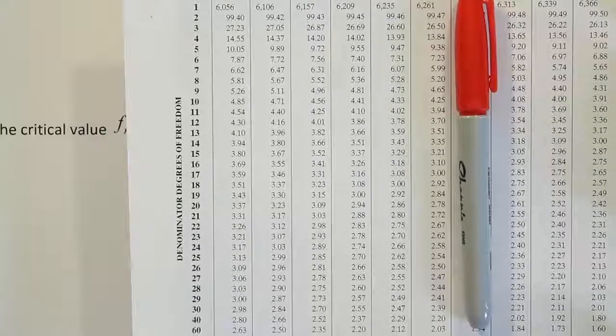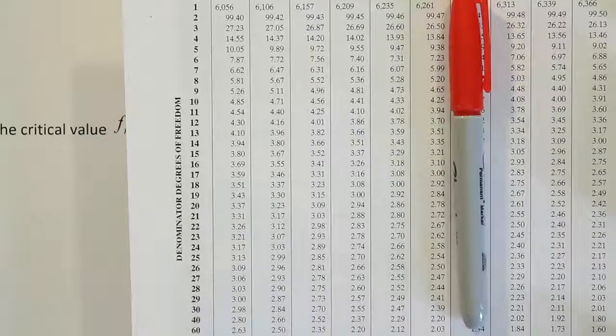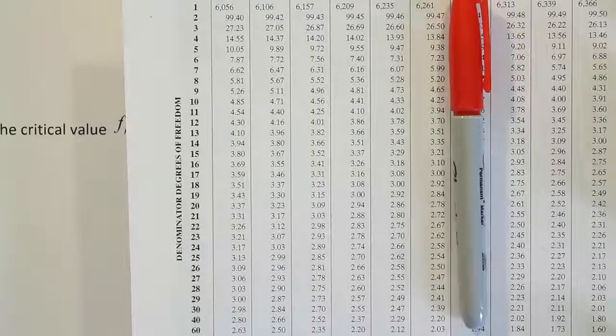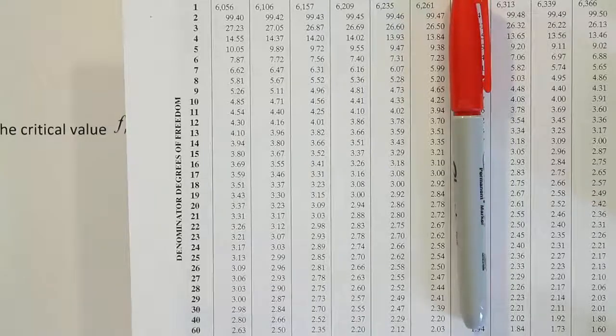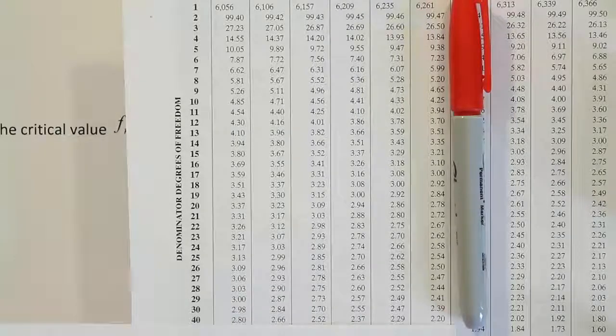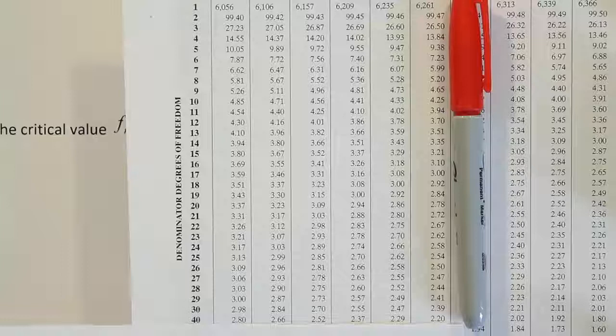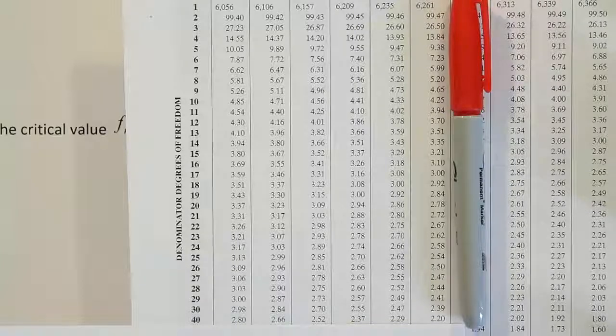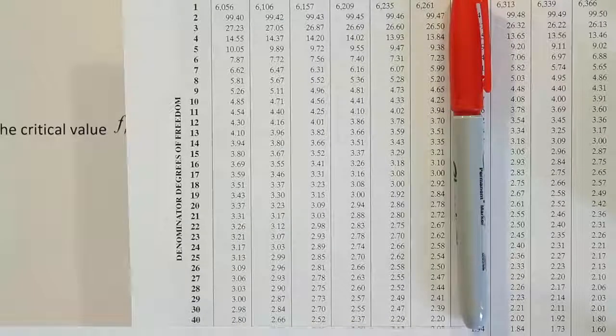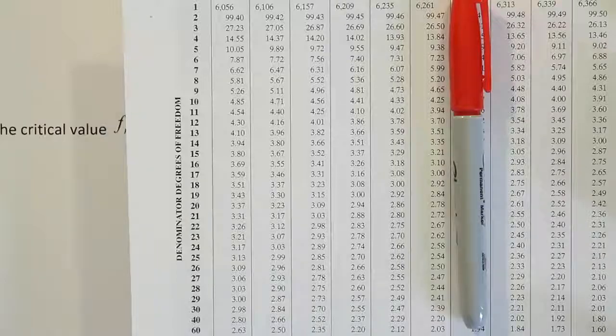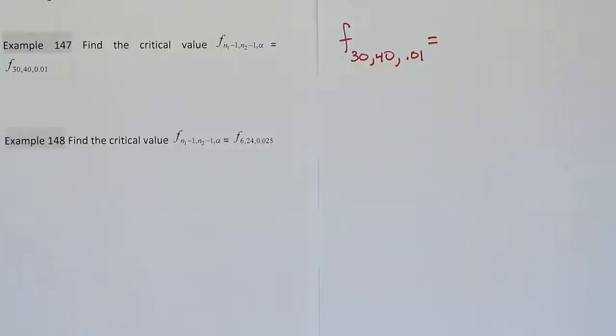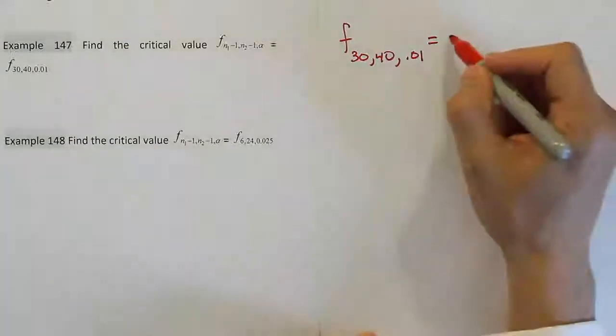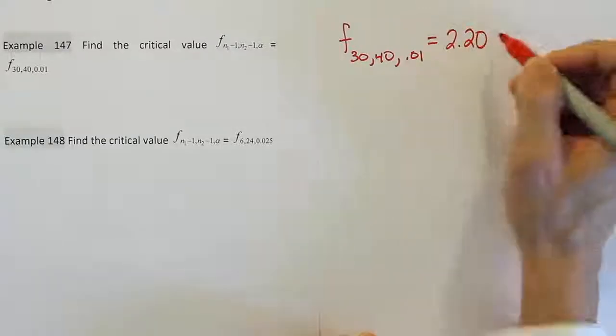Okay, so there's 40 and 60 there at the bottom of the table, and you can see that for our case we want to find the number in the 40 row and in the 30 column. And when we do that, we see that it's 2.20. Okay, so it looks like we found the answer 2.20 for the first one.